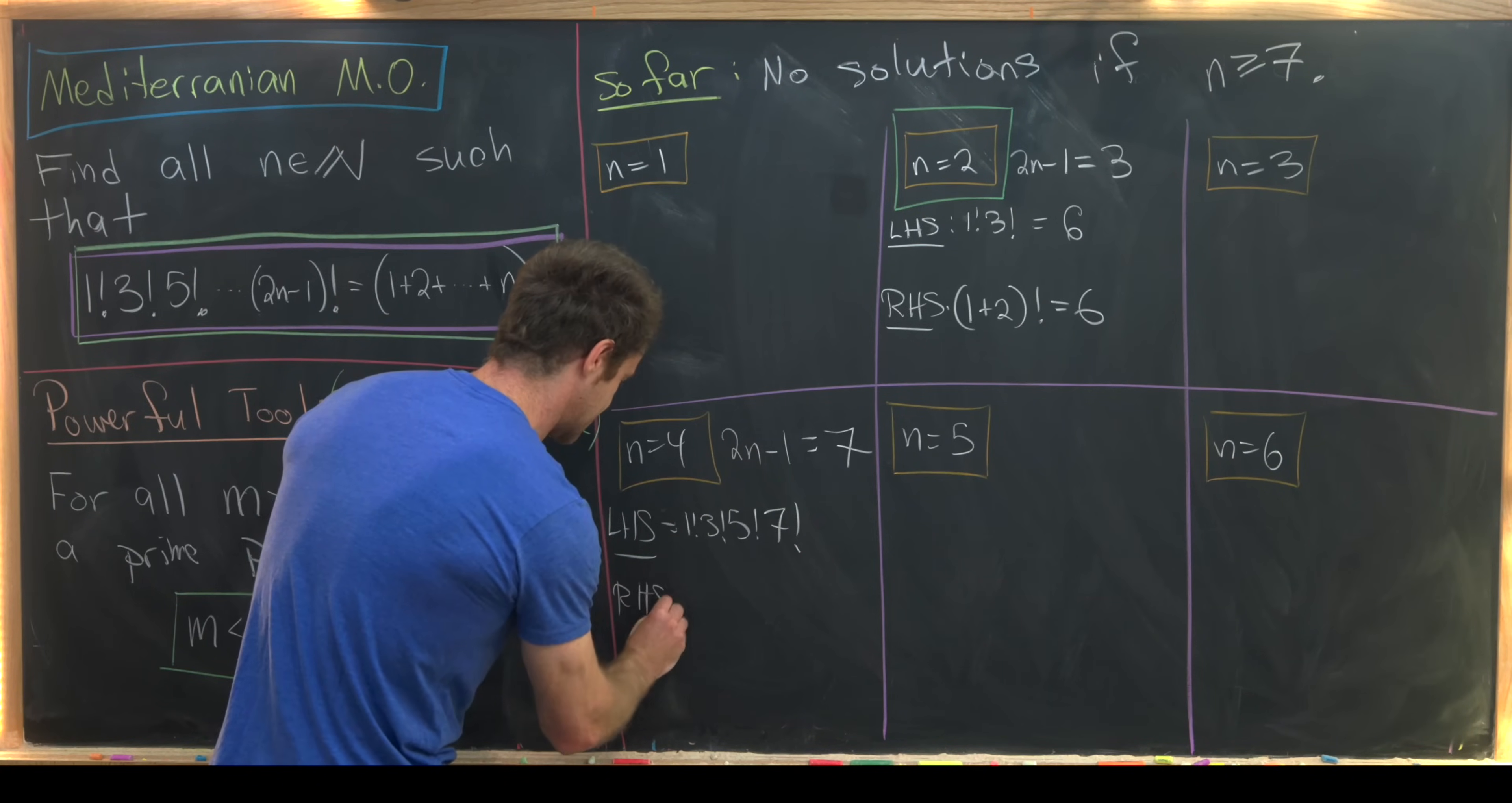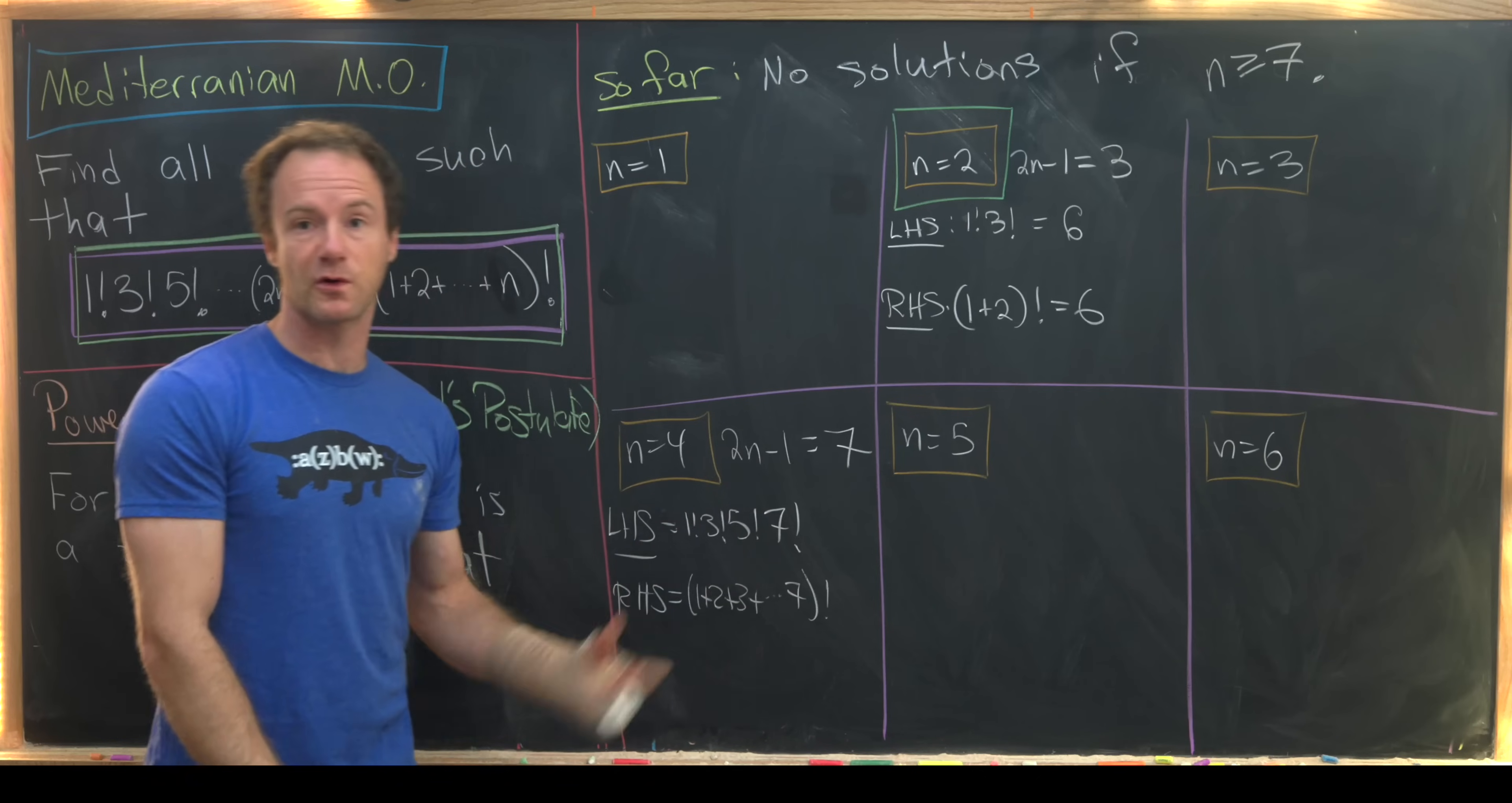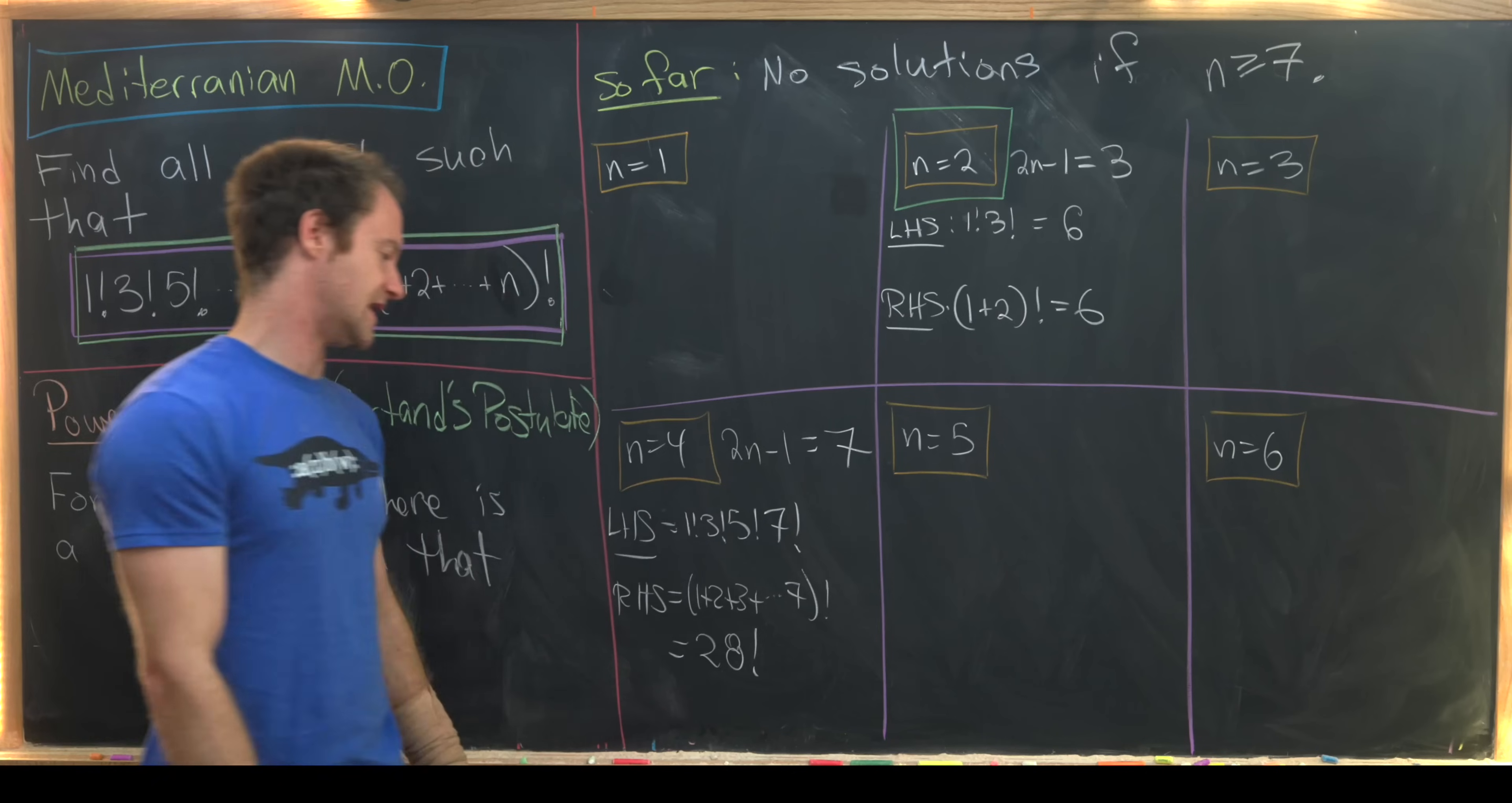And then our right-hand side is equal to 1 plus 2 plus 3 all the way up to 4 factorial. Okay, but let's recall we've got a standard formula for this triangular number. It'll be 4 times 5 divided by 2. In other words, it will be 10 factorial. So here we have 28 factorial.